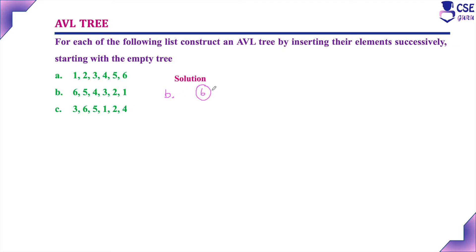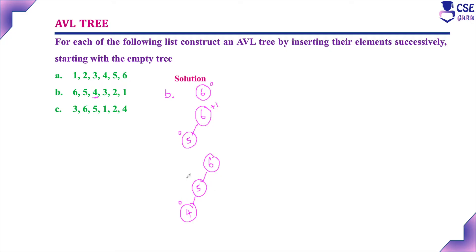Second problem. First, we have to insert 6. The balance factor is 0. Next, insert 5. Since 5 is less than 6, insert it as a left child. Now the balance factor is 0 and plus 1, so it is balanced. Next, we have to insert 4. Since 4 is less than 6, go to its left subtree, and since 4 is less than 5, insert it as a left child. Here the balance factor will get affected, so we have to implement a right rotation. If implementing a right rotation, 5 will become the root node, 4 will become its left child, and 6 will become its right child. Now everywhere the balance factor is 0, so it is balanced.